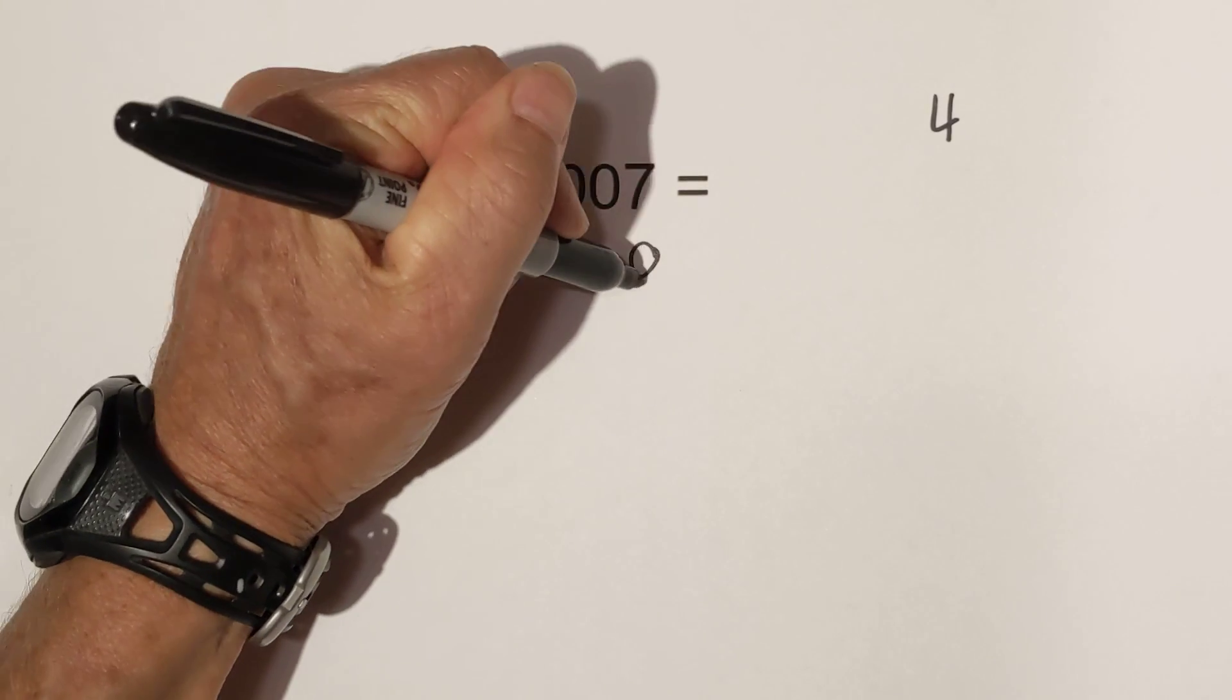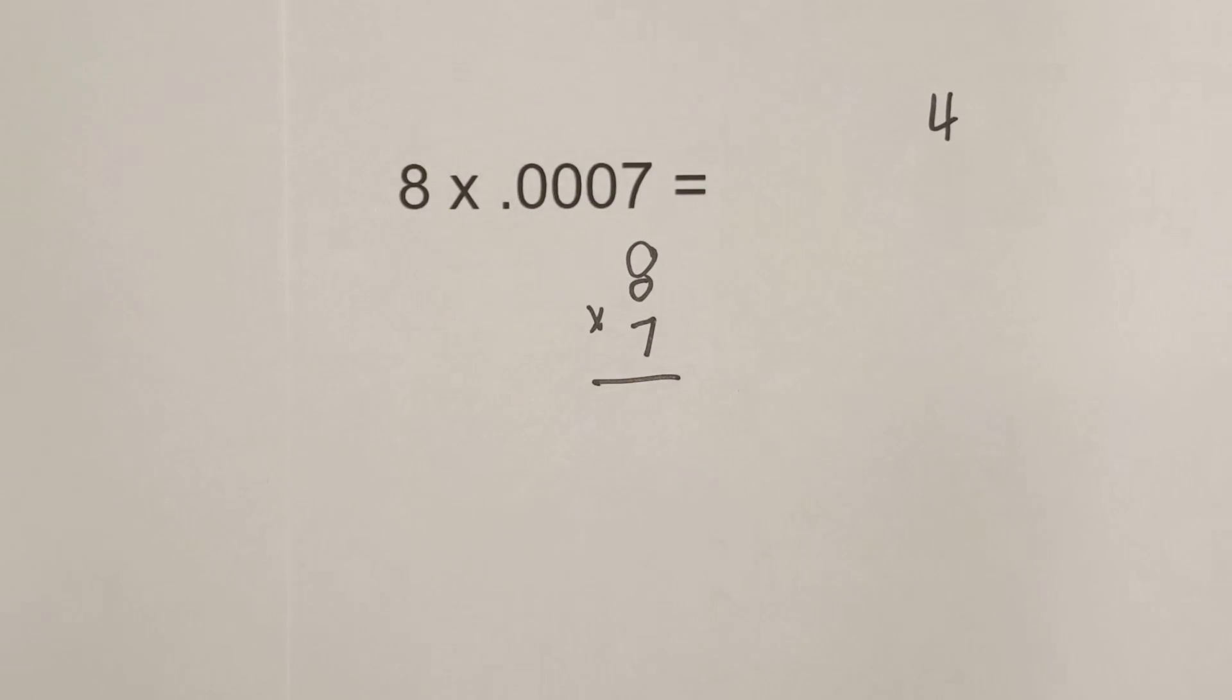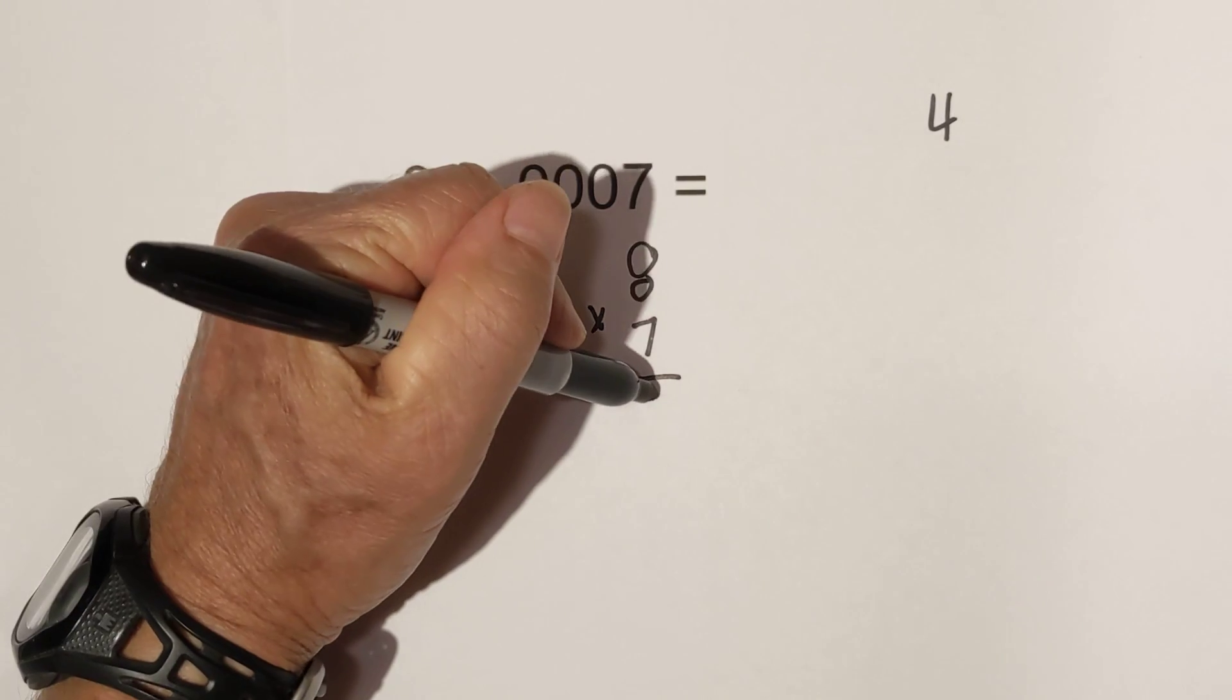Now we multiply it as if there are no decimals: 8 times 7. And 8 times 7 is 56.